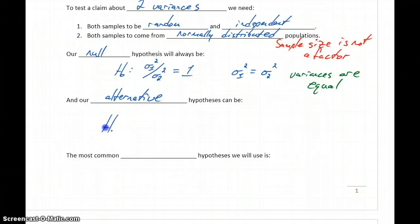The alternative hypothesis follows that it'll be a statement that those two variances are somehow different from each other, so that the ratio is actually greater than one, less than one, or not equal to one.